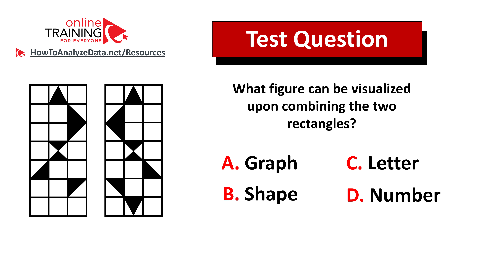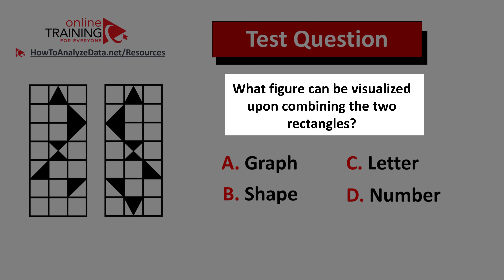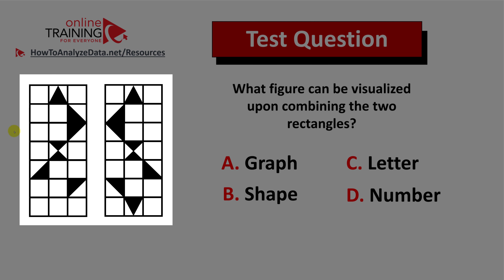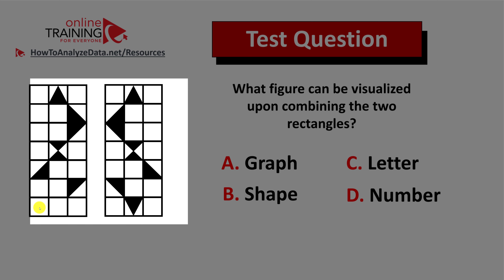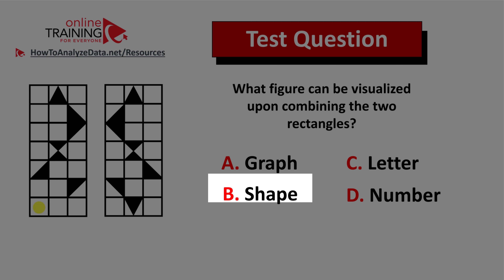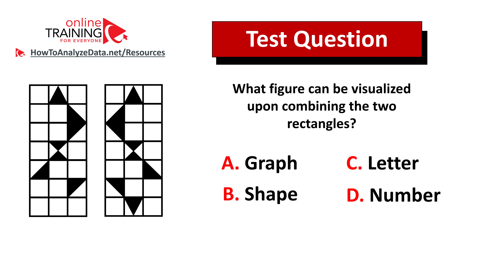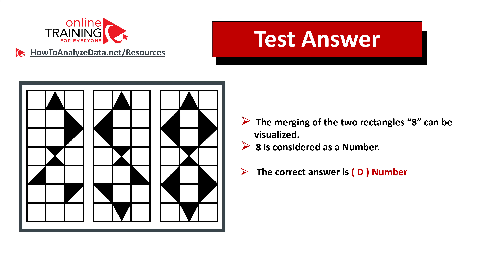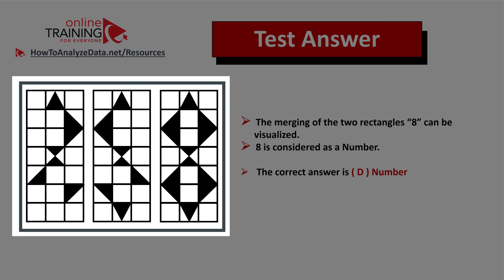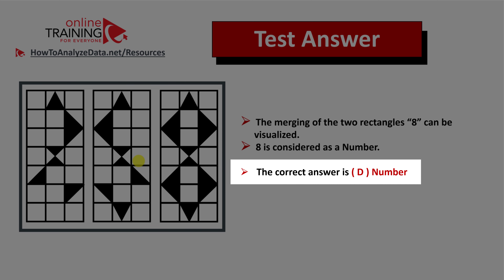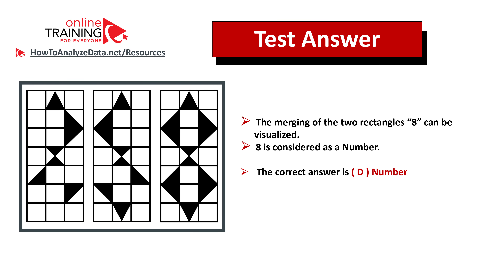Let me share with you a tricky question from the test. What figure can be visualized upon combining the two rectangles? You have two 7 by 3 rectangles and four choices: A — graph, B — shape, C — letter, D — number. Upon merging the two rectangles, you can see that 8 can be visualized, and 8 is a number. So the correct answer is choice D, number. Hopefully you've nailed this question and now know how to answer similar problems on the test.